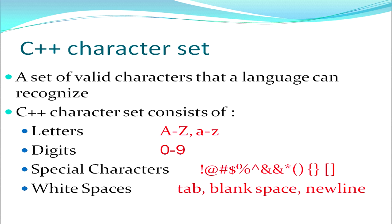Each character has got its own property, its own feature, its own usage. A C++ character set consists of letters — alphabets from A to Z in capital and A to Z in small. We have digits 0 to 9. We have special characters that you see on the keyboard. Some of them are displayed on the screen, others are not. But any character that you can type on the keyboard is a special character.